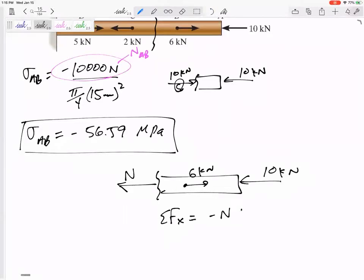Negative N, positive 6, negative 10 equals 0. So N, the math would tell me N needs to be negative 4. Could you tell that from the figure? Just don't take too many shortcuts. Don't go too fast. But yes, N is 4 kilonewtons compression.